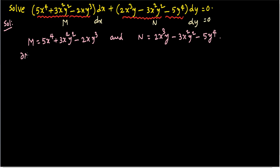Now check the condition for exactness, which is ∂M/∂y = ∂N/∂x. If both are equal, then we can say the given equation is exact; otherwise it is non-exact.